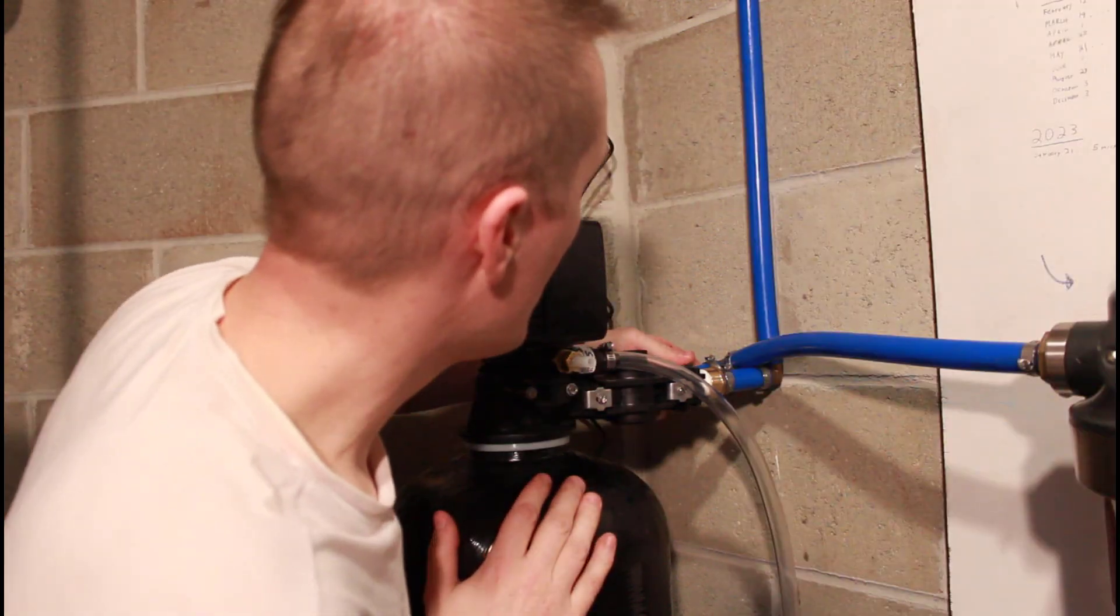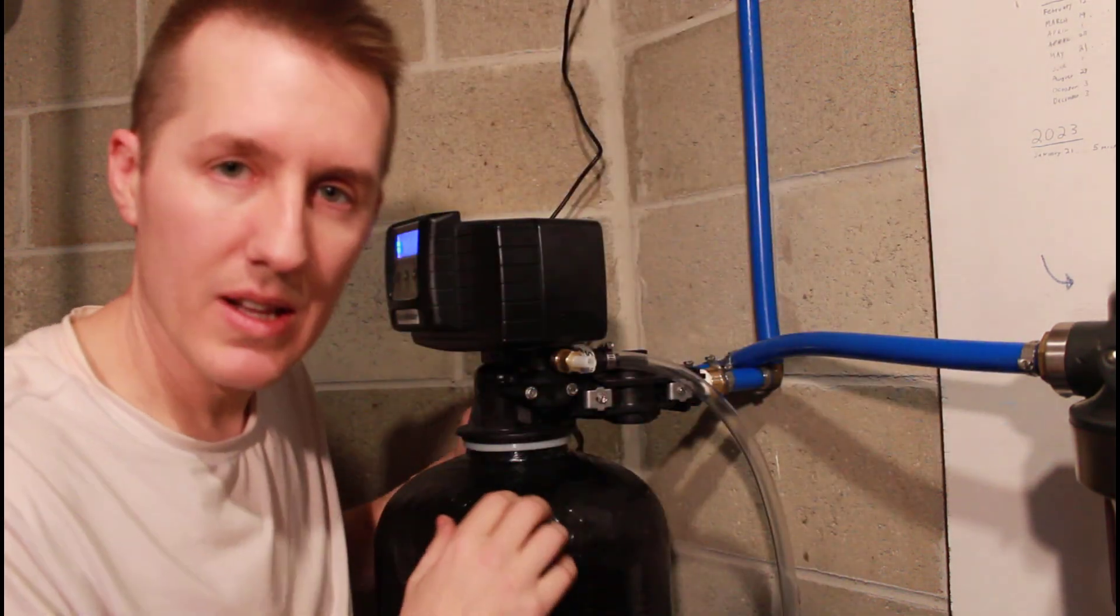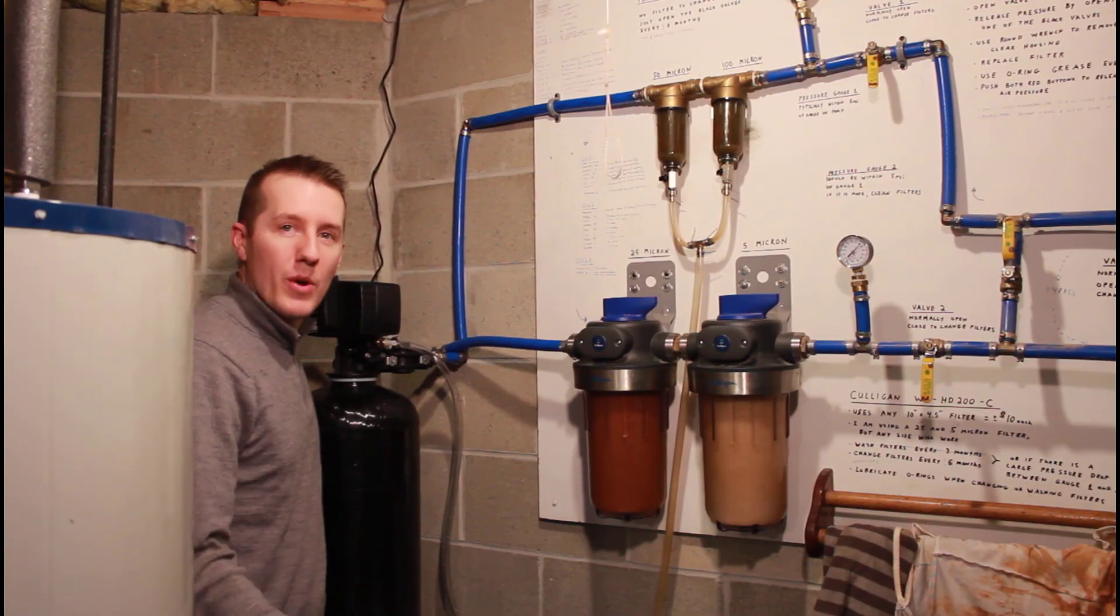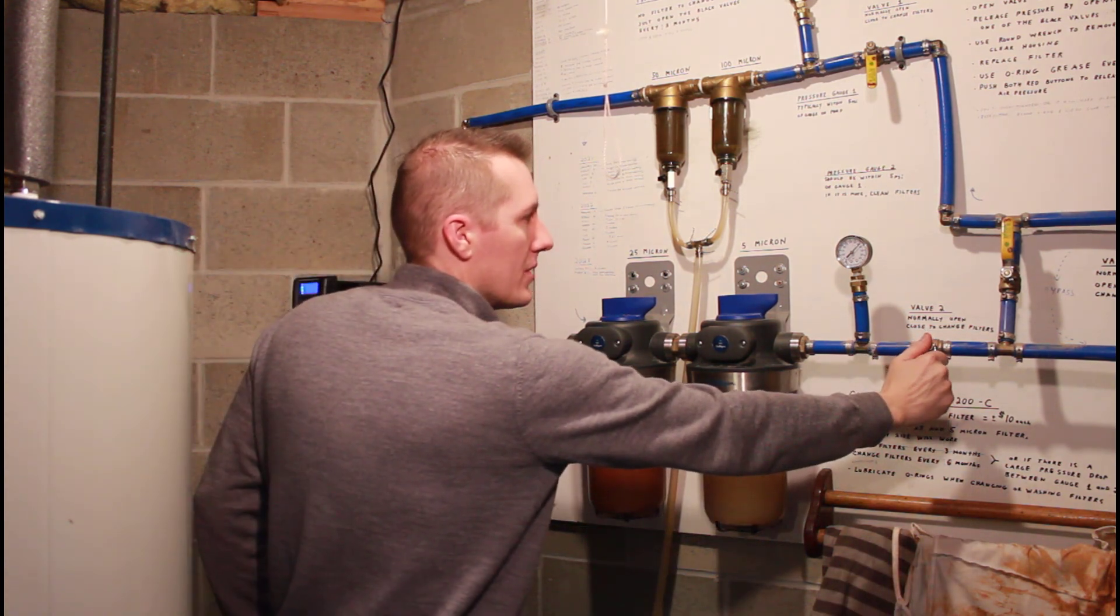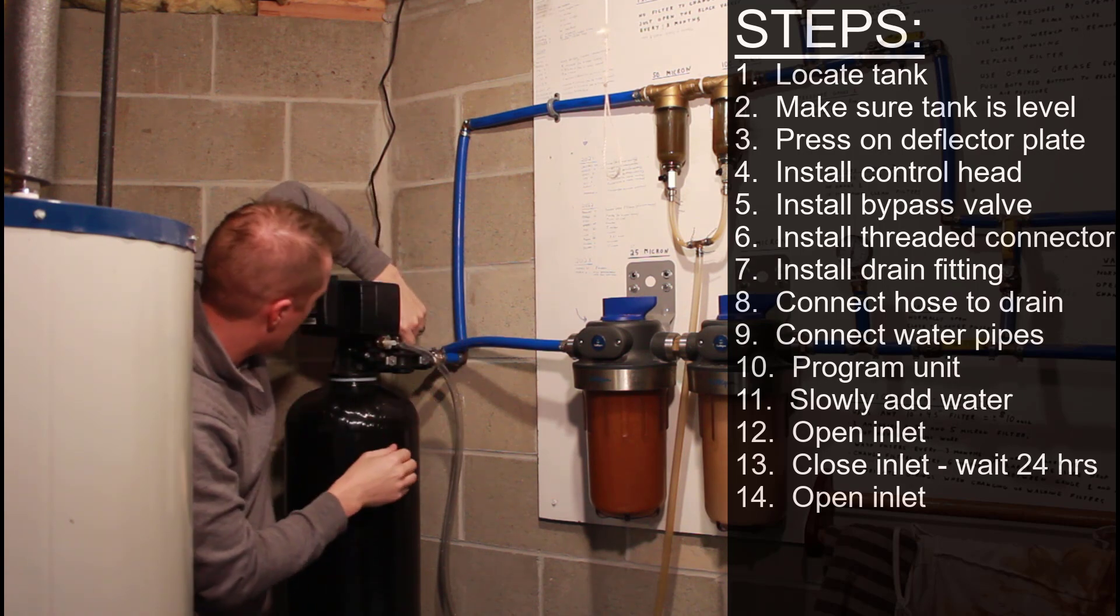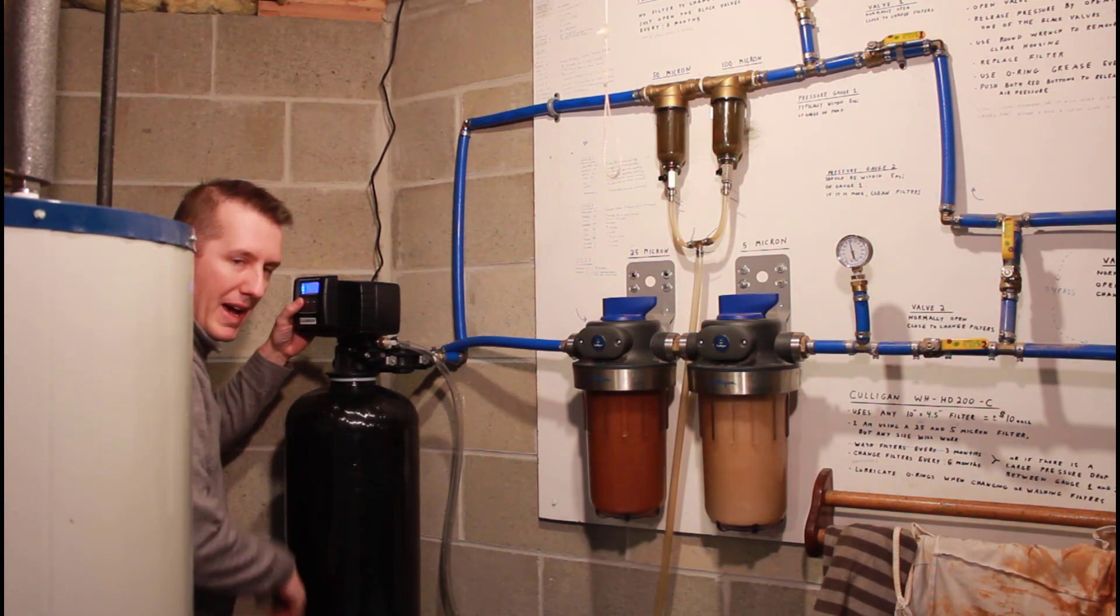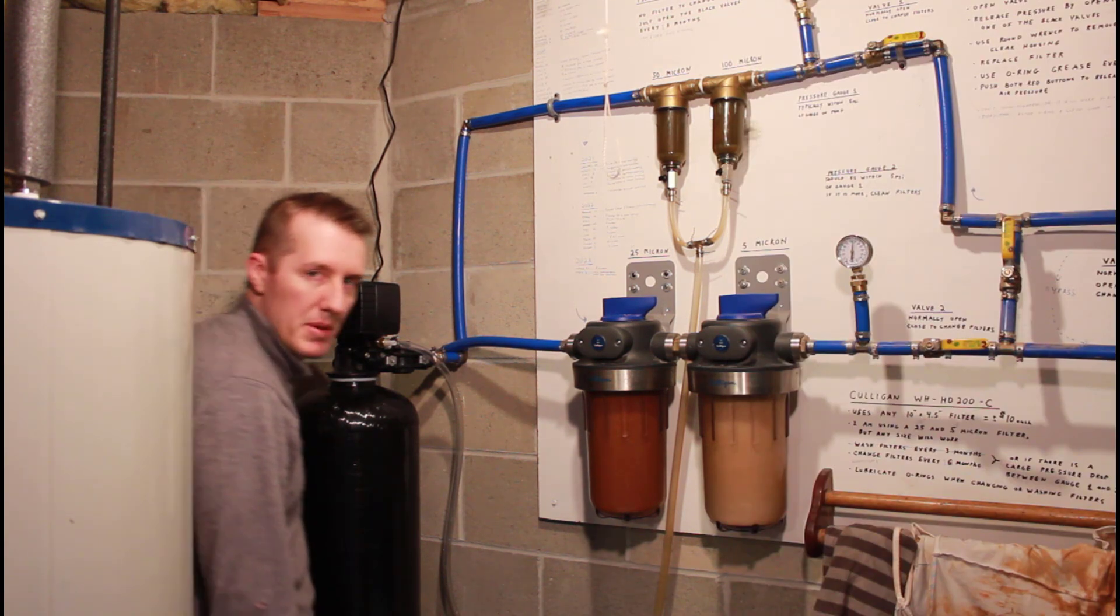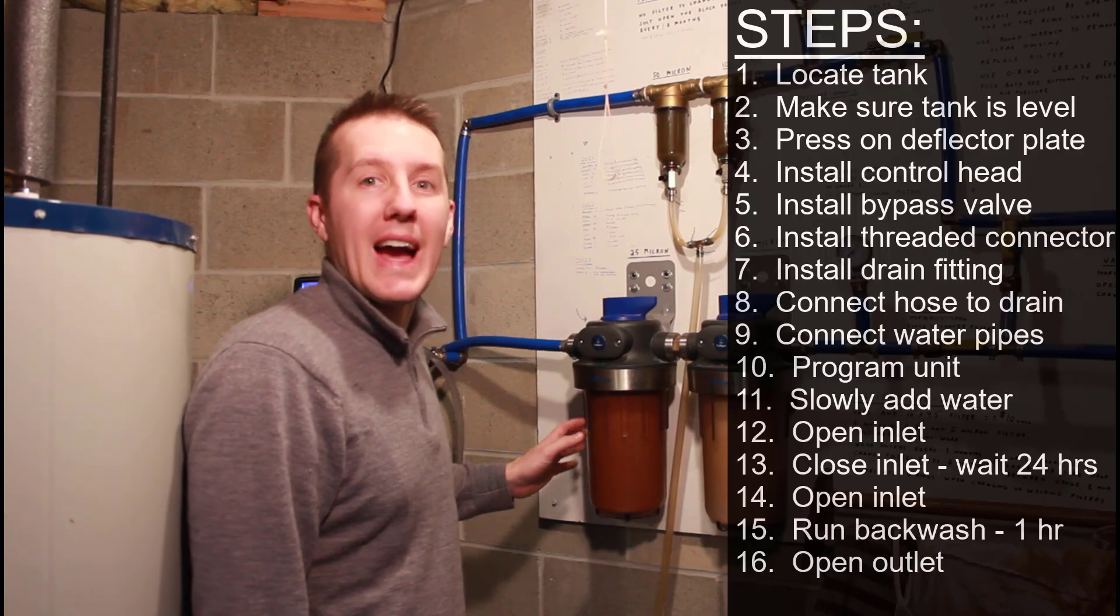Okay, it's been 24 hours. Hopefully all that media is settled down in there. I'm going to turn on the water slowly. And then it says, open the inlet. Then it says, press and hold the far left button to do a backwash and let it run for one hour. It says BW, so backwash is running. After one hour of doing the backwash, I'm going to open the outlet. I can see it's already draining water out here.